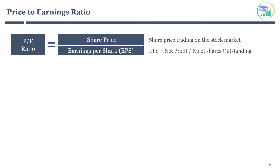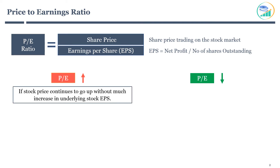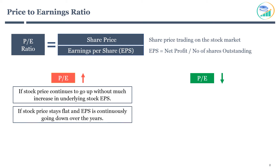P/E can go up or down due to corresponding changes in the stock price or EPS. P/E will increase if the stock price continues to go up without much increase in EPS. Another way P/E can increase is if the stock price stays flat and EPS is continuously going down over the years.